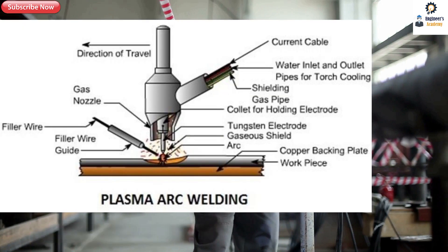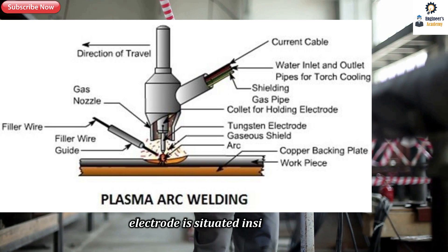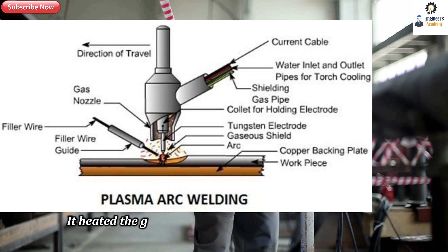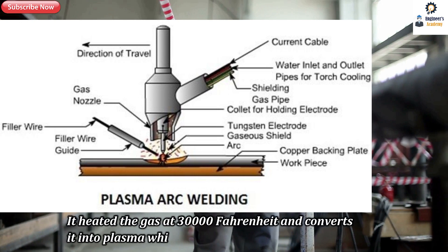Plasma arc welding is much similar to gas tungsten welding. In this process, the arc is generated between a tungsten electrode and the work piece. The main difference is that the electrode is situated inside the torch in plasma arc welding. It heats the gas to 30,000 degrees Fahrenheit and converts it into plasma, which is directed at the welding area.